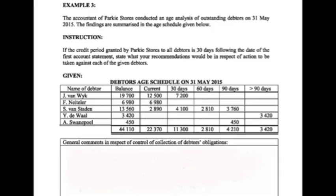Instructions: if the credit period granted by Parky Stores to all debtors is 30 days following the date of the first account statement, state what your recommendations would be in respect of actions to be taken against each of the given debtors.